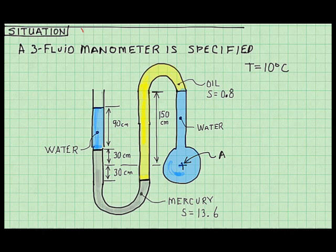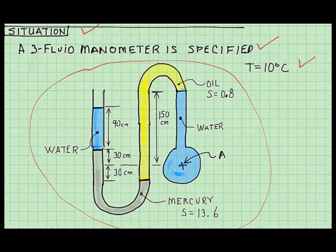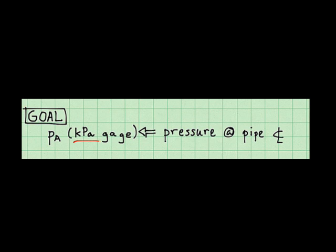I define the situation by describing the problem and sketching a system diagram. Notice that I use color to distinguish the three fluids: water, oil, and mercury. I write down kPa gauge because a manometer measures gauge pressure, not absolute pressure. And this means I'm looking for the pressure at the centerline of the pipe, which is at point A.